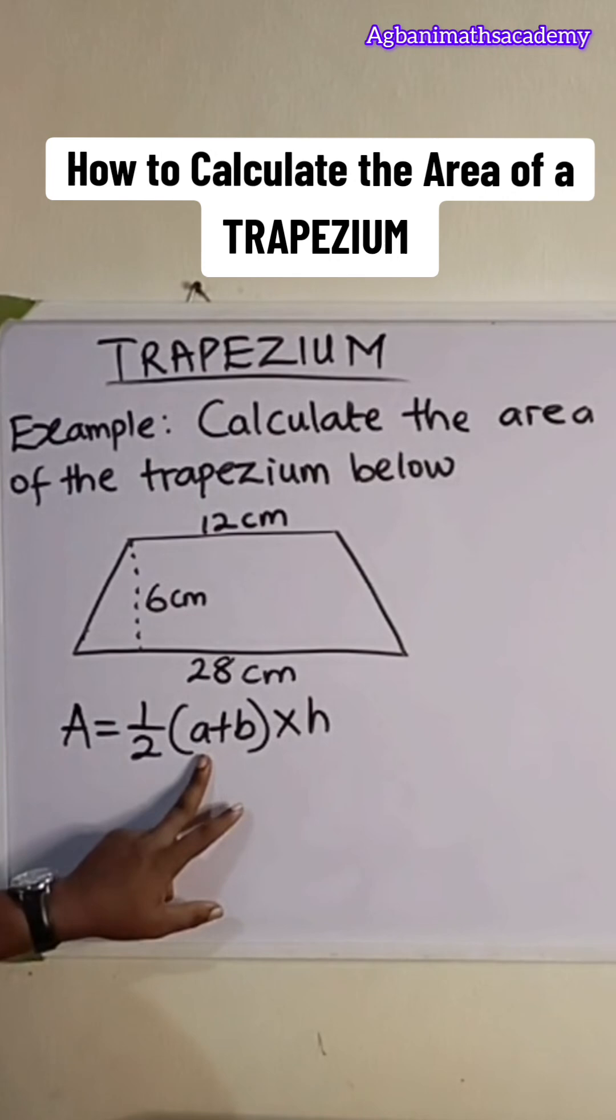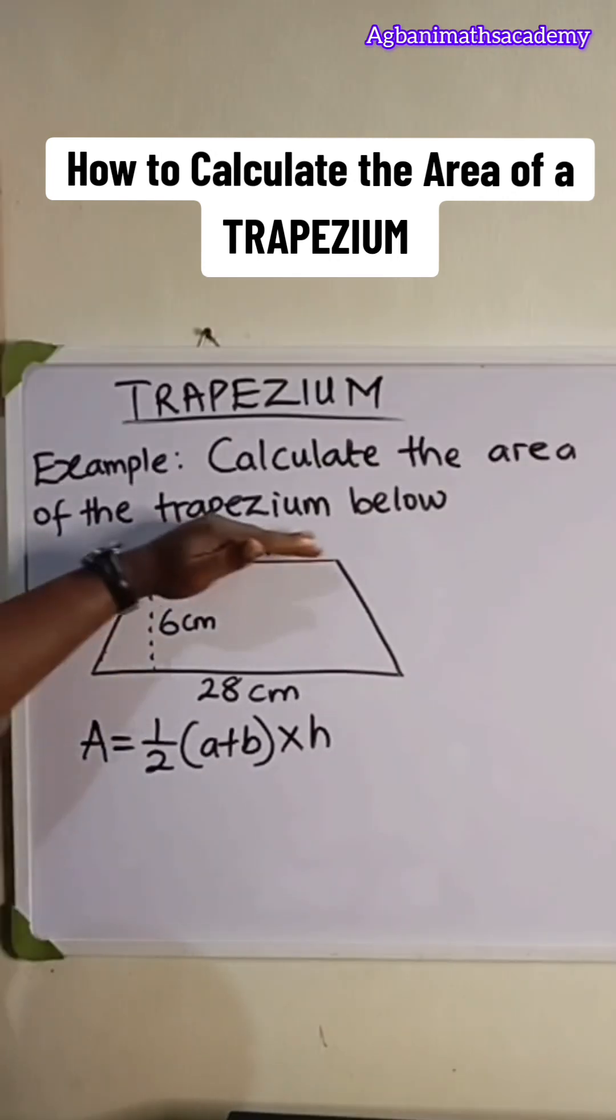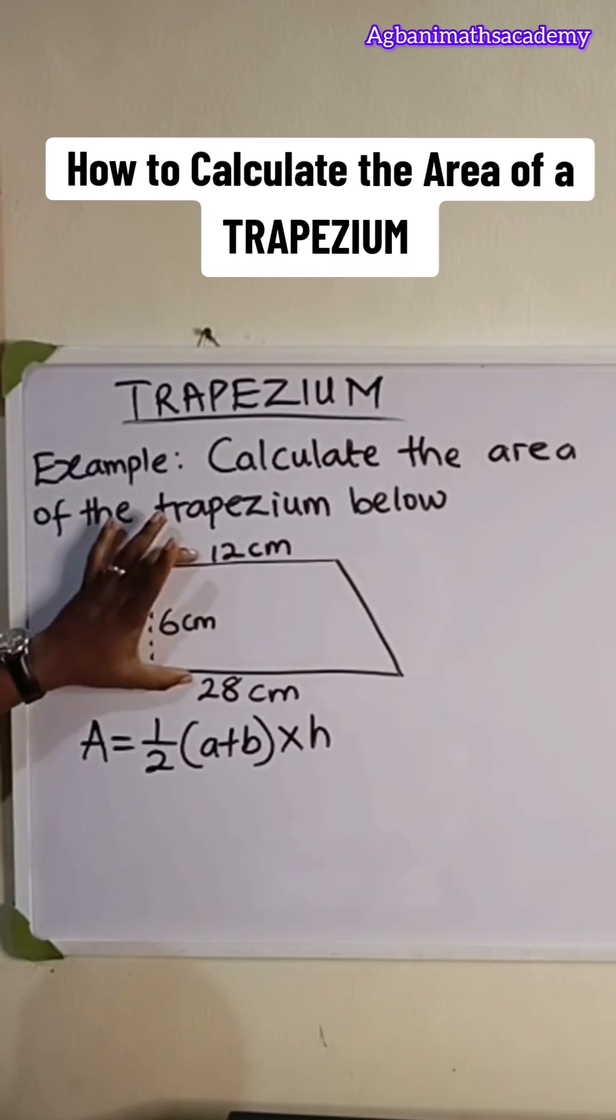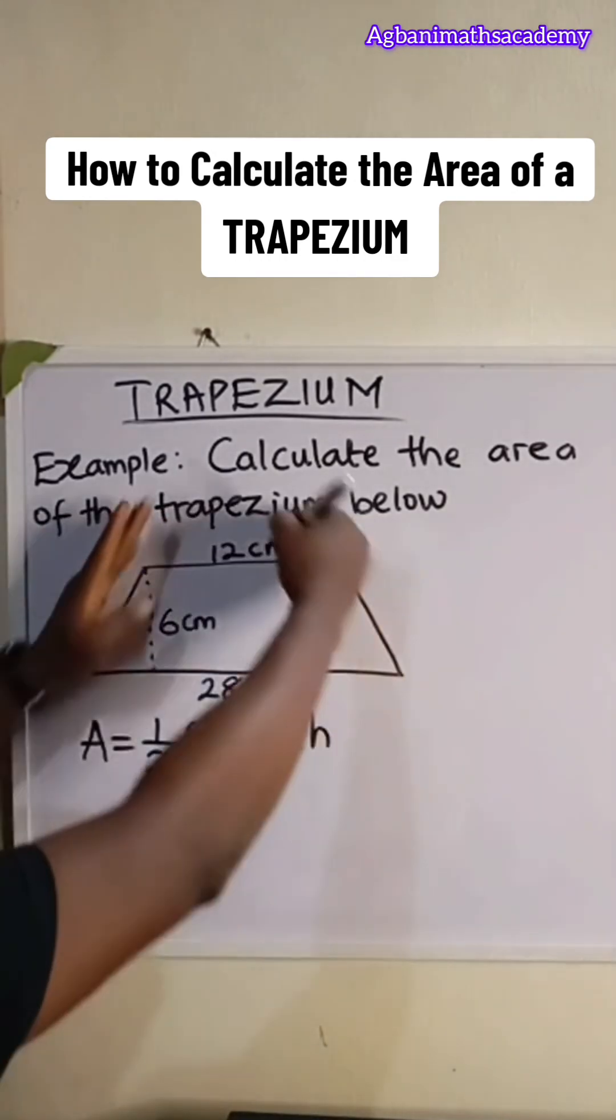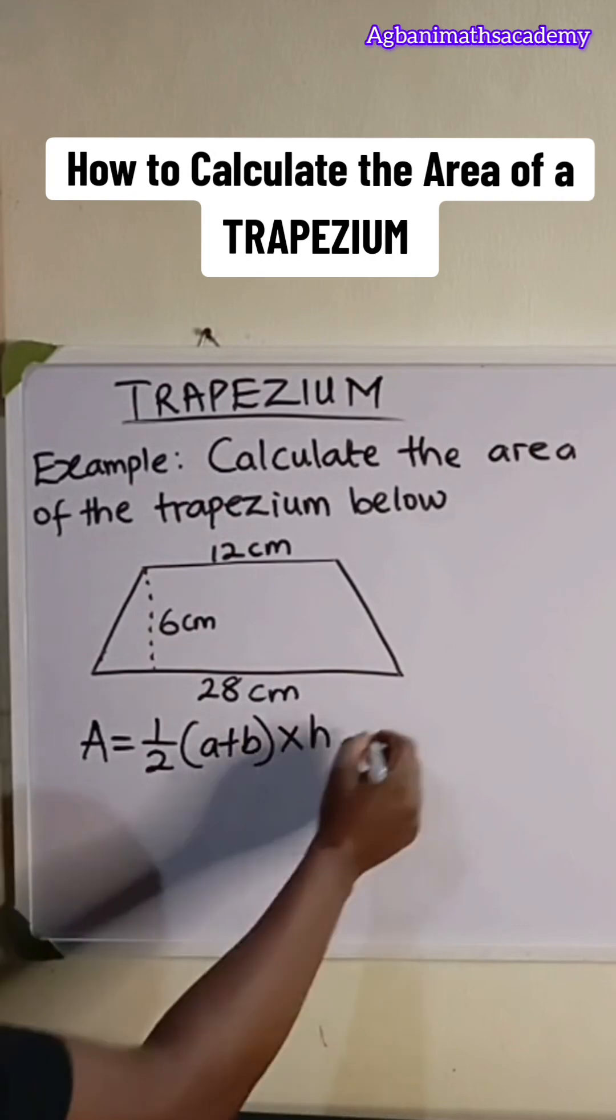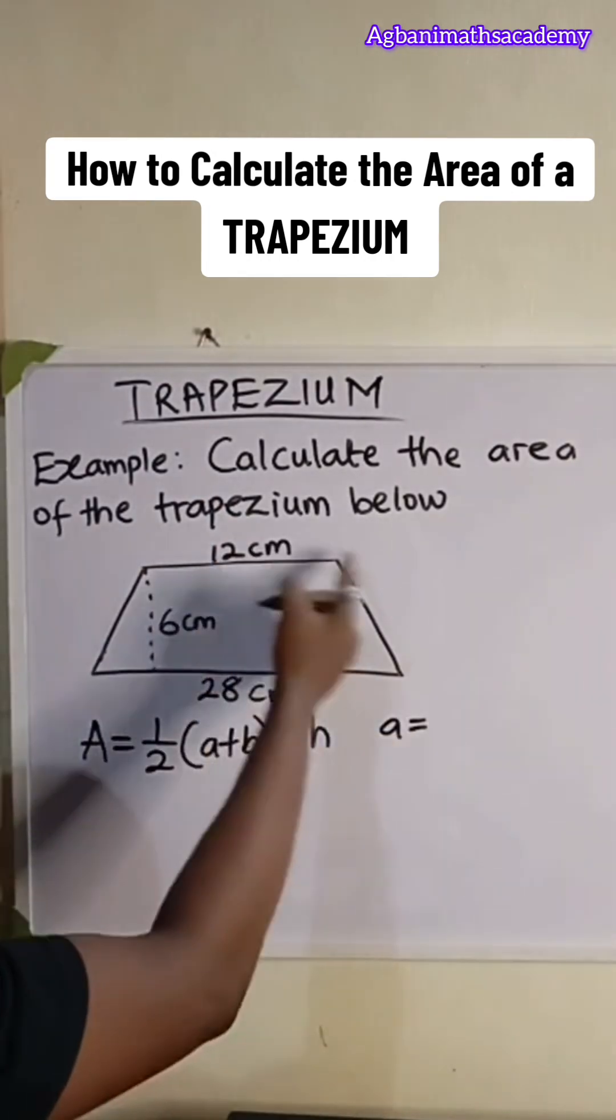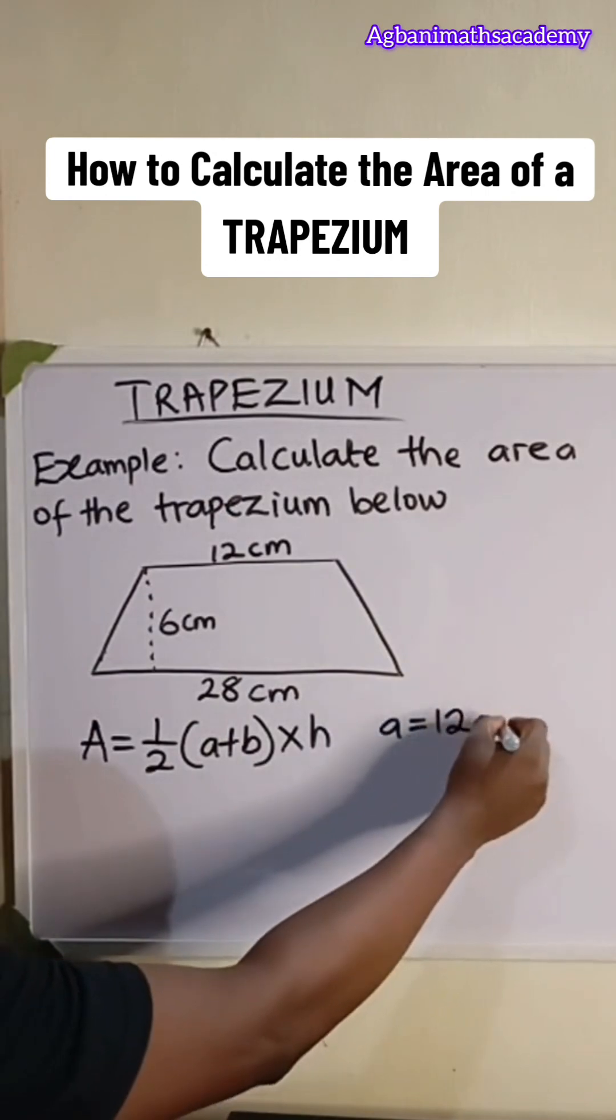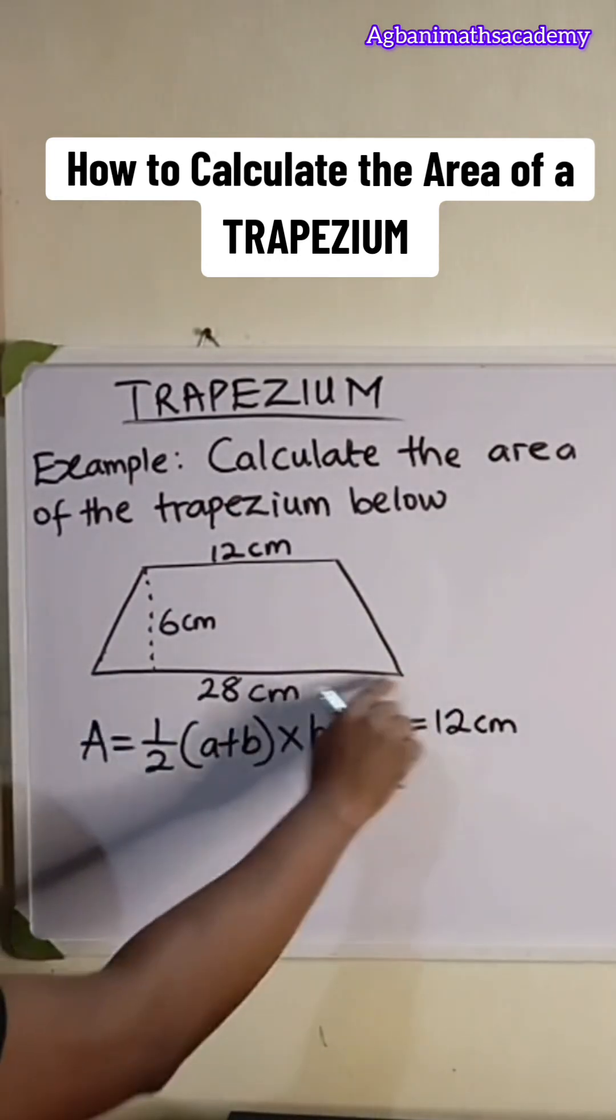What's the value of a? So a is the shorter length. These two sides are parallel, these two sides are not parallel. So the shorter length among the two parallel sides is our a. So a is equal to 12 centimeters. Our b is equal to the longer length.